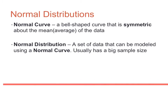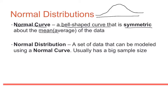Let's first define what normal distributions are exactly. A normal curve is a bell-shaped curve that is symmetric about the mean, or the average of the data. By bell-shaped, we mean it's shaped kind of like a bell. The mean will be right here in the middle of the data to split it perfectly in half.